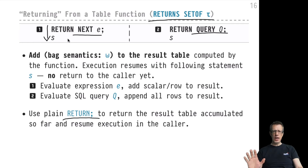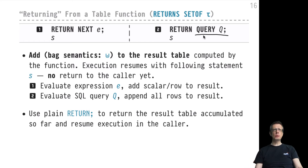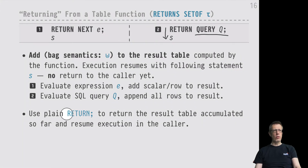RETURN QUERY acts the same way — it does not return from the set-returning UDF. It evaluates SQL query Q, adds all the rows returned by Q to the accumulated table, and then proceeds to execute the next statement. Again, there is no returning from the set-returning UDF at that point. We only return with the plain RETURN without the NEXT or QUERY modifiers.